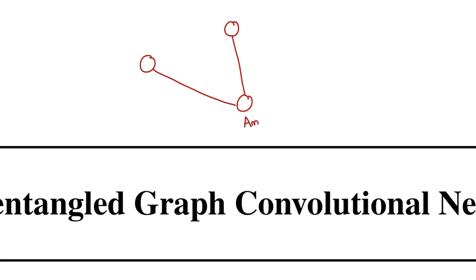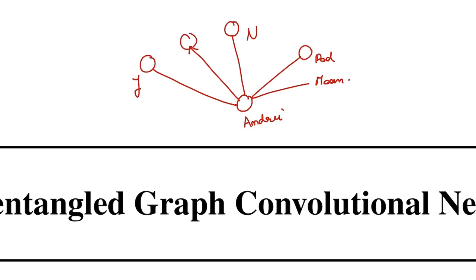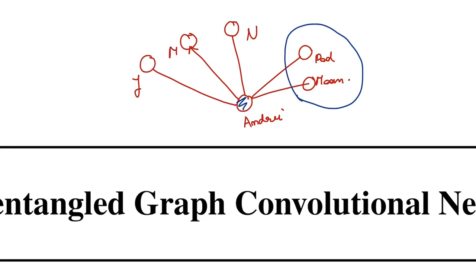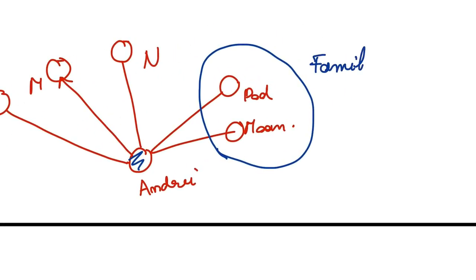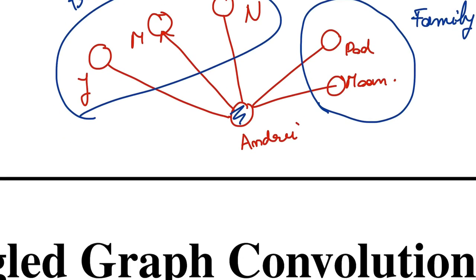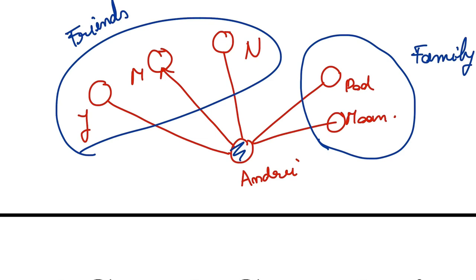For example, this is Andre — that's me — and here's Jane, and N. Let's also add your dad and your mom, and another one, M. In this circle is family, and in this circle are friends. There are nodes representing people and edges between them representing relationships, such as who knows who — for example, my mom and my people are connected with each other.